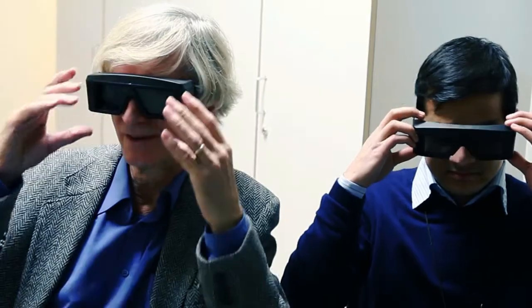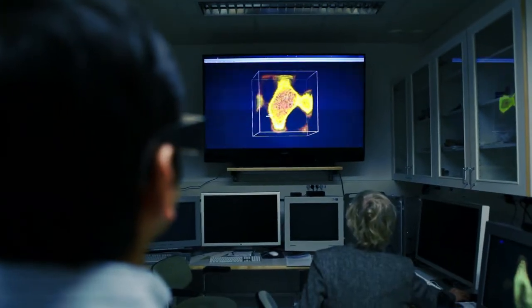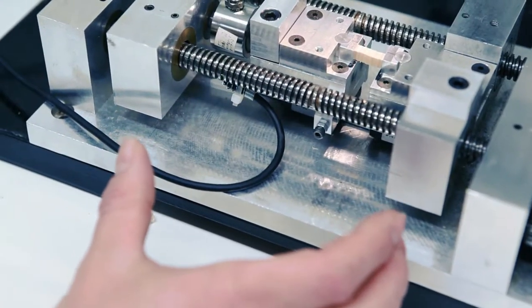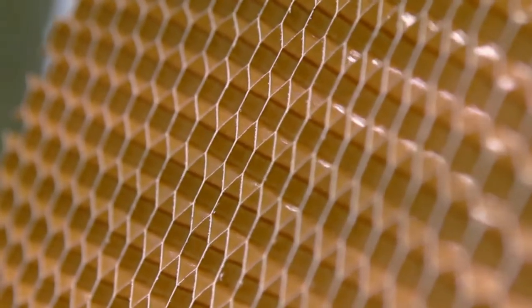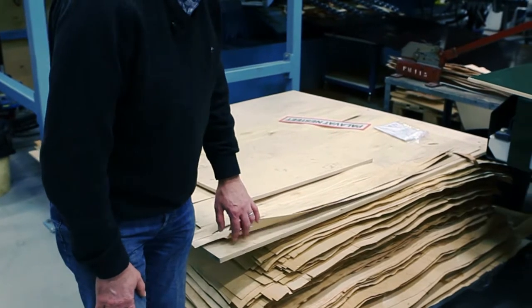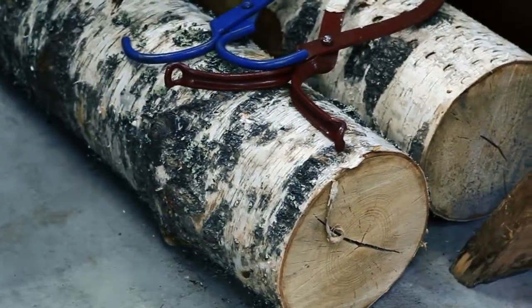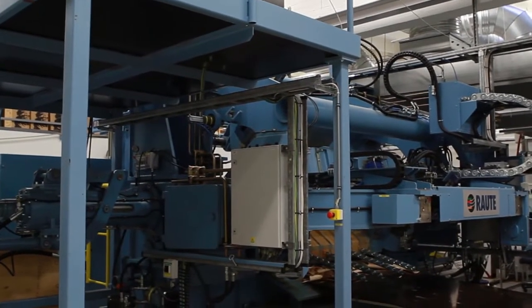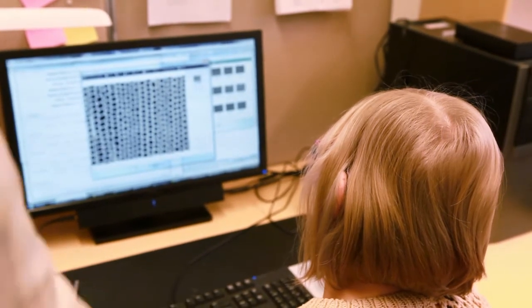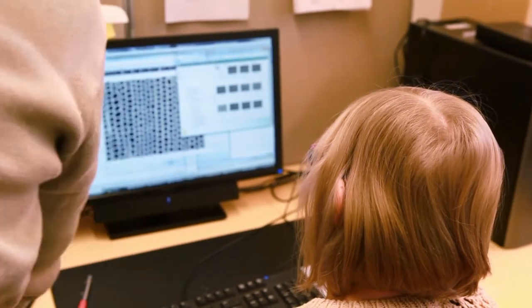eWood is a research project that combines four groups in computational simulations and experimental work. What we're trying to do is understand how energy is absorbed by the wood during the cutting process and try to understand how we might reduce energy consumption. We're also trying to create a digital model of wood. That's where the eWood comes from - electronic or electric.